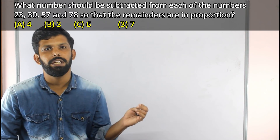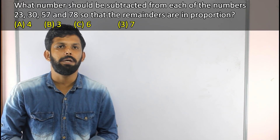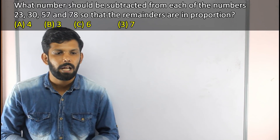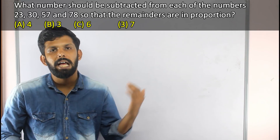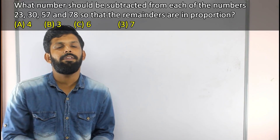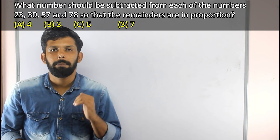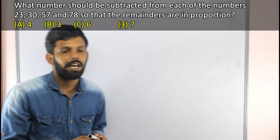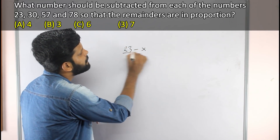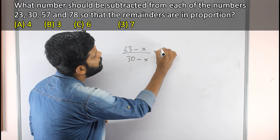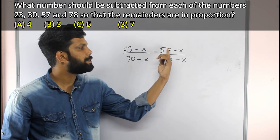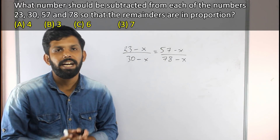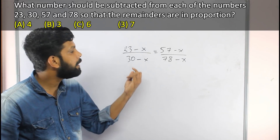Next question: What number should be subtracted from each of the numbers 23, 30, 57, and 78 so that the remainders are proportional? Options: A) 4, B) 3, C) 6, D) 2. If we subtract x from each, then (23−x) : (30−x) = (57−x) : (78−x). This is A, B, C, D. Since they are proportional, A by B equals C by D.